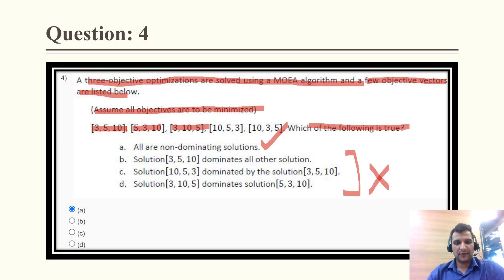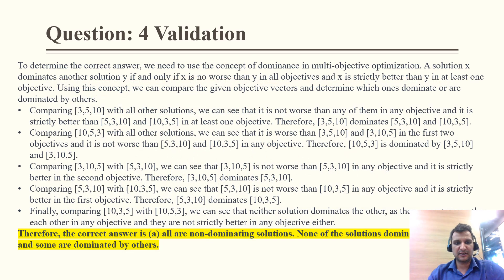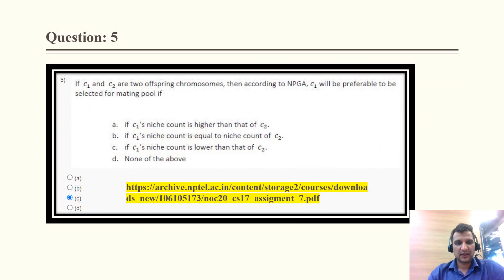All solutions are non-dominating — this is the only option which is true and the rest are invalid. The vectors (3,5,10) and variants are all non-dominating. To fully understand this, one must understand the concept of Pareto optimal solutions, but 100% this is the correct answer.